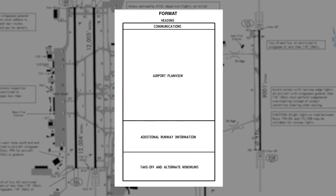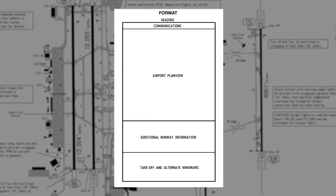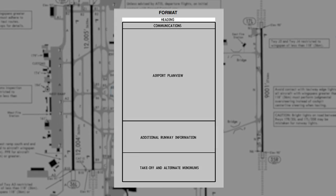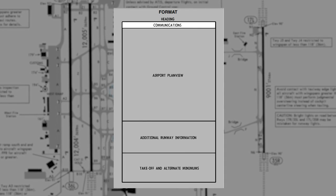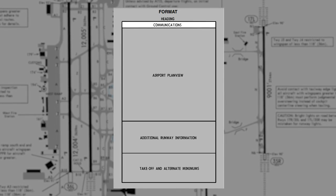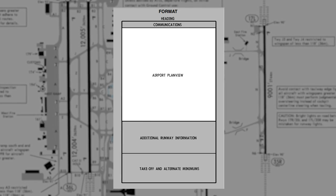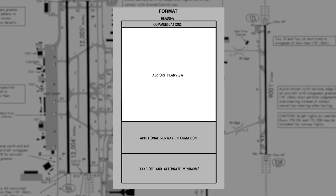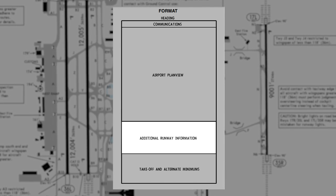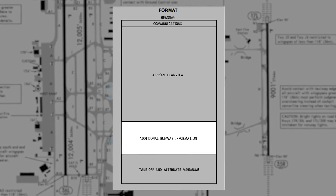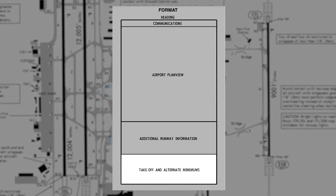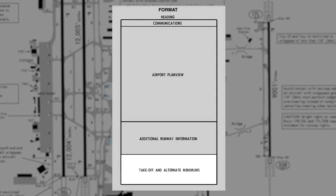Jeppesen has laid out their charts very methodically. They have a heading section, a communication section, a plan view section, additional runway information, and finally takeoff and alternate minimums.